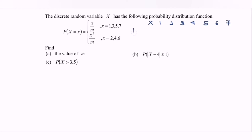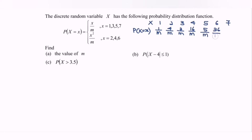And we have the corresponding probabilities. Substituting each value: x=1 gives 1/m, x=2 gives 4/m, x=3 gives 3/m, x=4 gives 16/m, x=5 gives 5/m, x=6 gives 36/m, and finally x=7 gives 7/m.